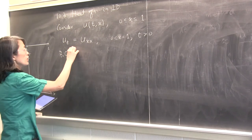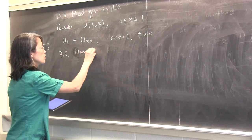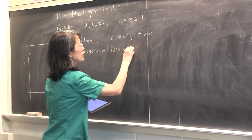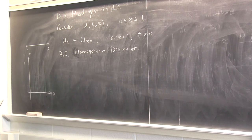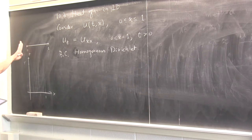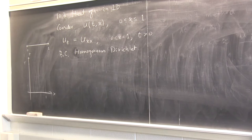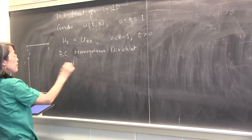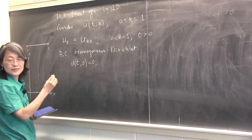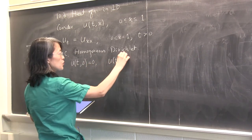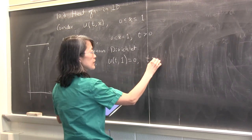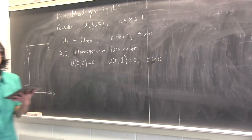The boundary conditions we'll look at today are only the homogeneous Dirichlet. Homogeneous means it's zero; Dirichlet means the temperature is fixed at the boundary. You can imagine you have a stick with some initial temperature, then you take an ice-water mixture and stick it to the two sides, so at the boundary it takes temperature zero. Temperature at x=0 is zero, and temperature at x=1 is zero, fixed for all T greater than zero.